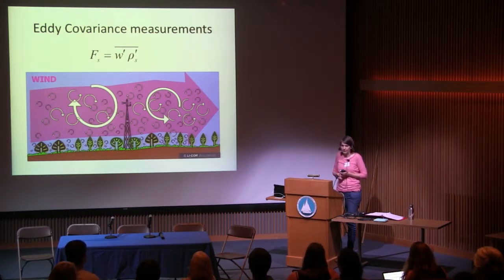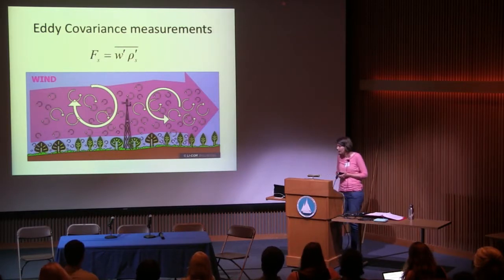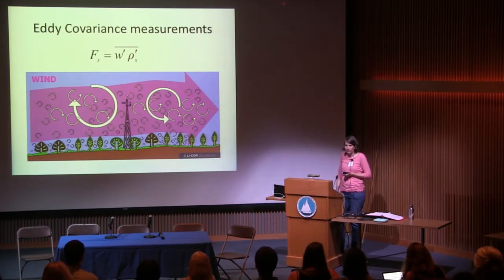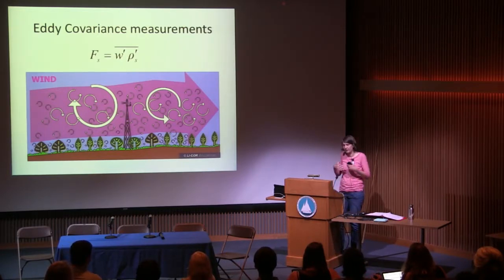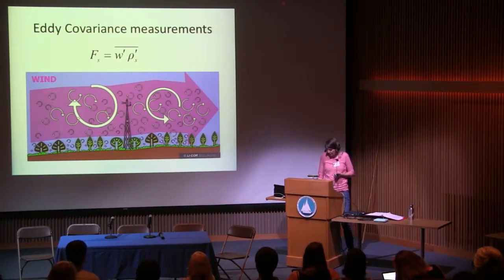The main advantage of this method is that it provides a quasi-continuous time series of flux measurements with half-hour resolution. The second characteristic is that it integrates over a large area. The instrumentation is mounted at a certain height above the canopy, meaning flux measurements are representative of a large upwind zone — so it's a whole ecosystem measurement.